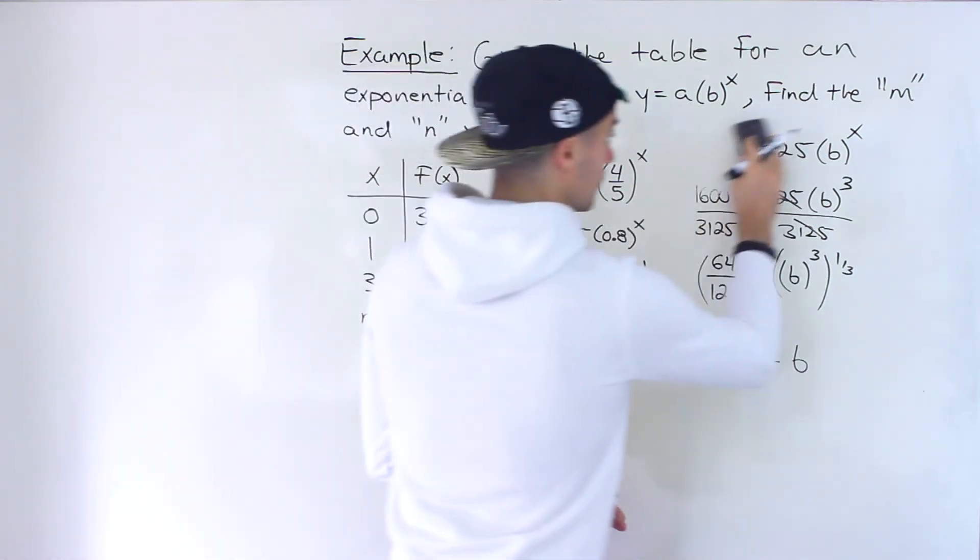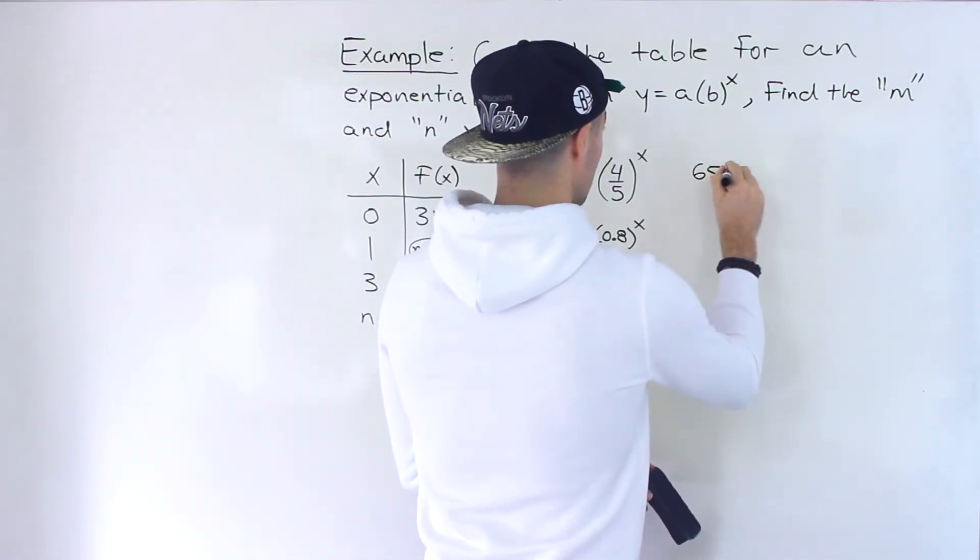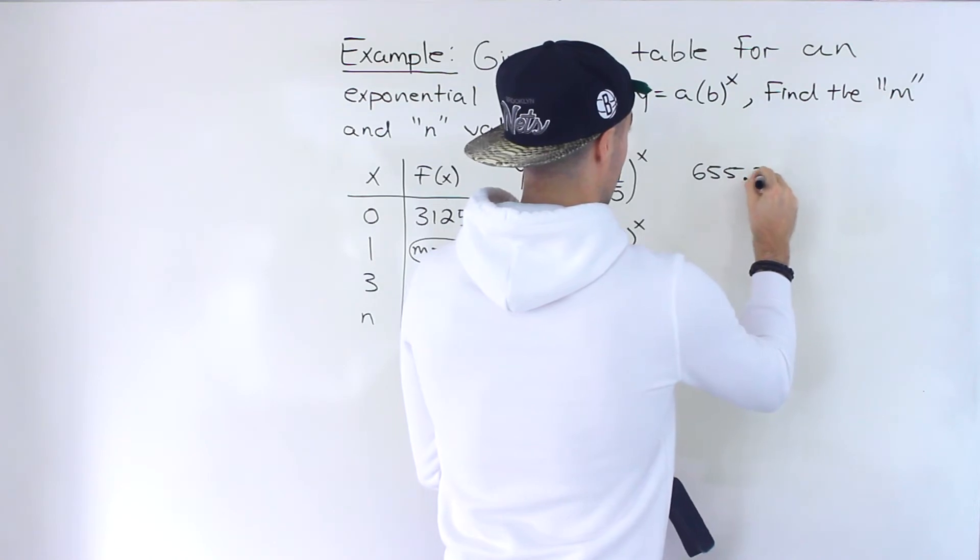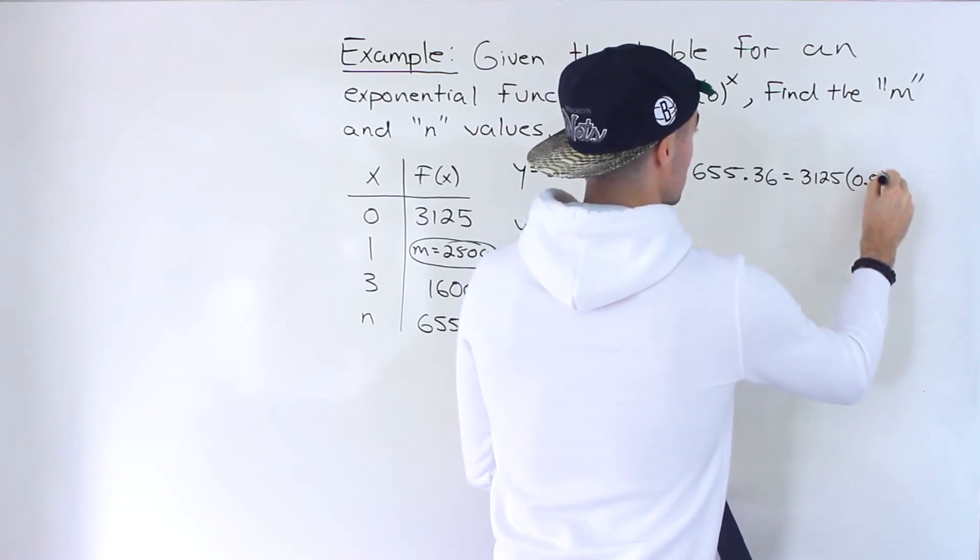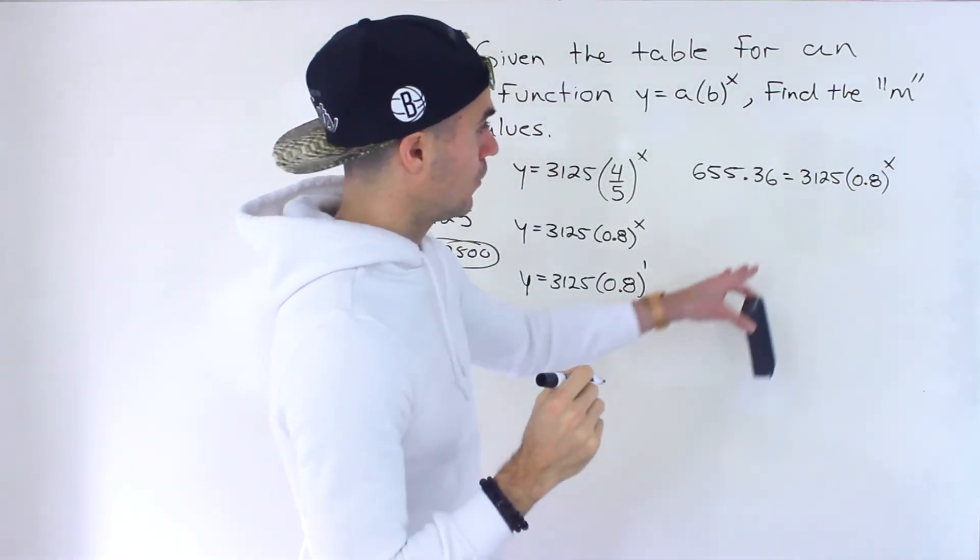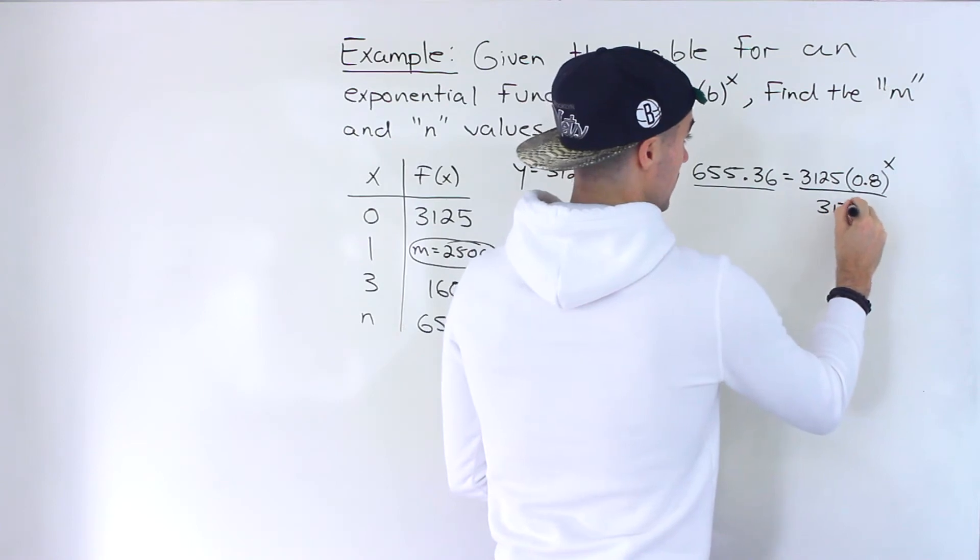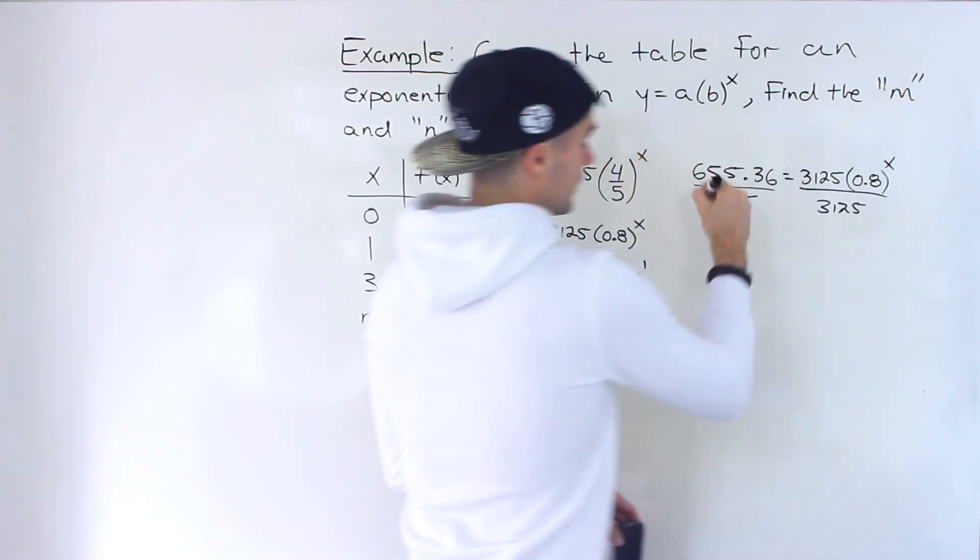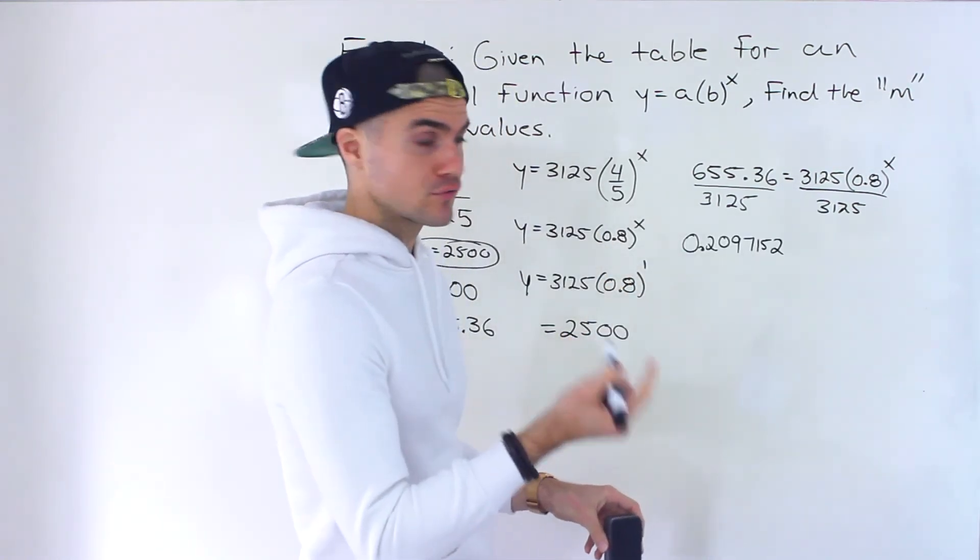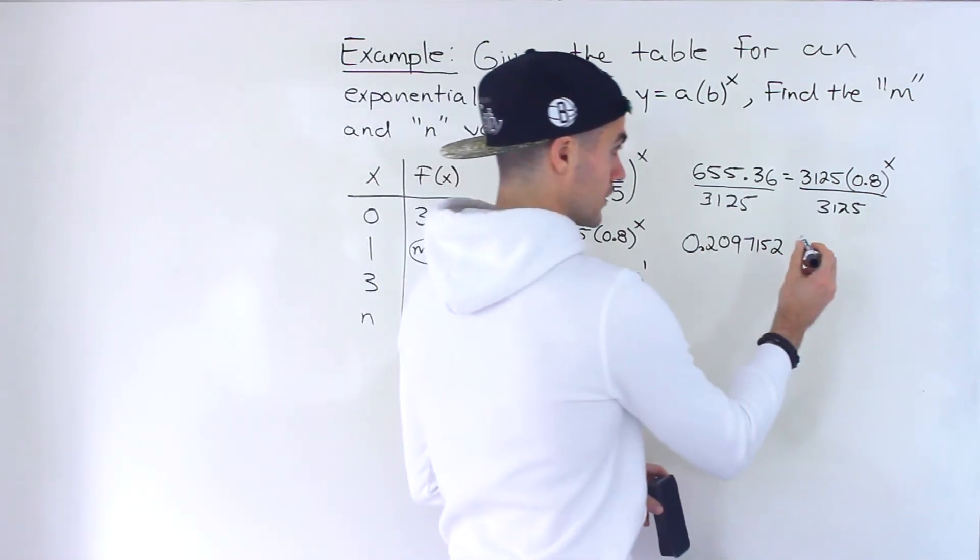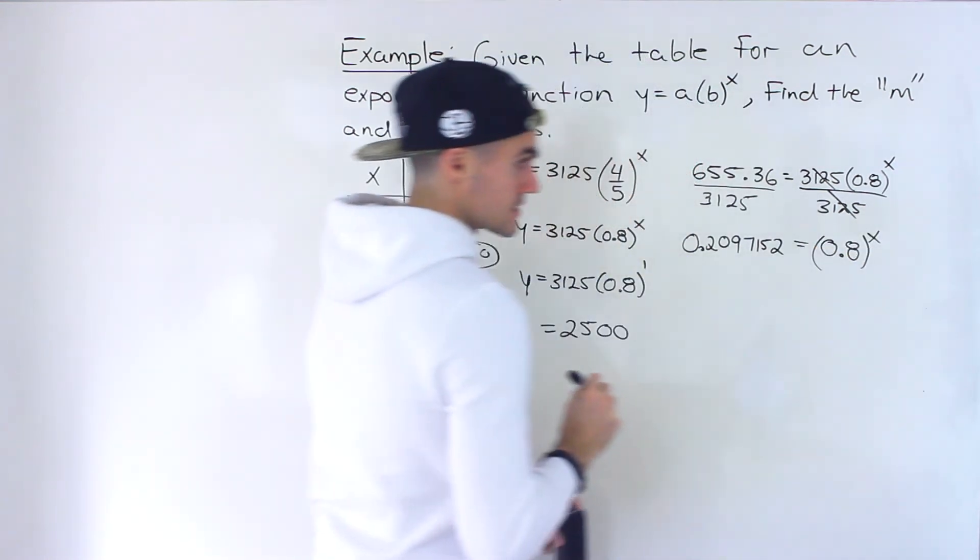And then this n value, what we got to do is we again plug it in here, but we would be plugging in a y value this time. And we're going to solve for x. So this one's going to be a little bit more hectic. What we would do is you would actually divide both sides by 3,125. And then over here, you're going to get a decimal. And the decimal is actually going to be 0.2097152. You want to make sure you don't round over here. And then on the right side, these cancel out, you end up with 0.8 to the power of x.